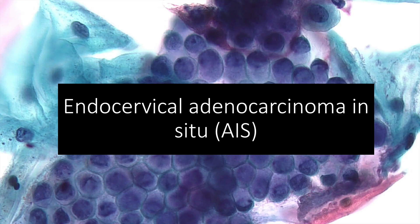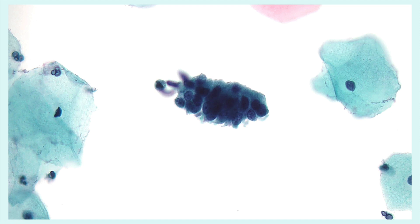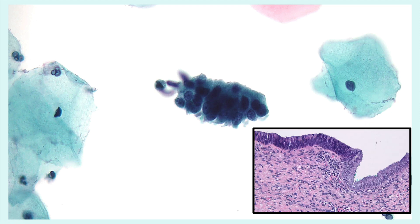Now we'll cover endocervical adenocarcinoma in situ, or AIS. Cells can be present in sheets and clusters and can have pseudostratification. Feathering is typical. Nuclei are enlarged, chromatin is coarse, and the nuclear-to-cytoplasmic ratio is elevated. Usually there's a clean background. This diagnosis should be made with caution if most of the above features are not present. This patient had abundant groups and coexisting high-grade squamous intraepithelial lesion, and follow-up showed adenocarcinoma in situ.